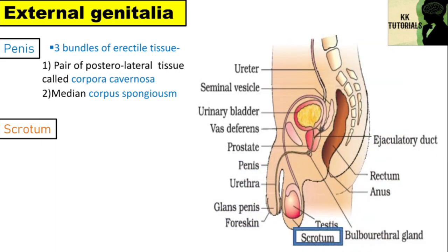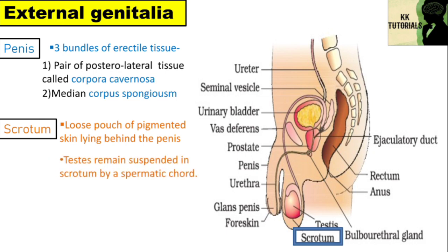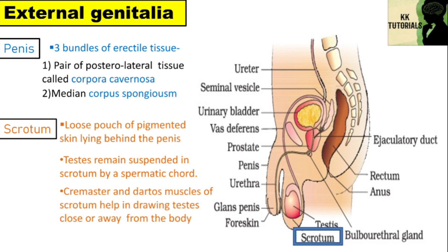The scrotum is a loose pouch of pigmented skin lying behind the penis, divided into right and left scrotal sacs by a septum of tunica dartos, made of smooth muscle fibers. The testes remain suspended in the scrotum by a spermatic cord. The cremaster and dartos muscles help in drawing the testes close to or away from the body, maintaining their temperature 2 to 3 degrees Celsius lower than normal body temperature, which is necessary for spermatogenesis.